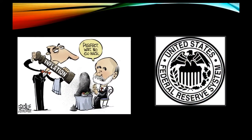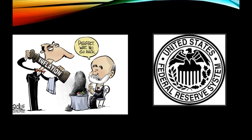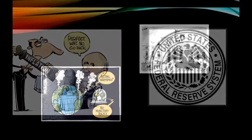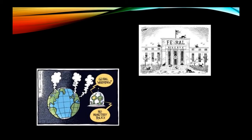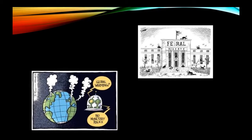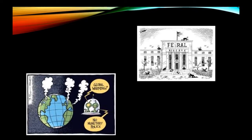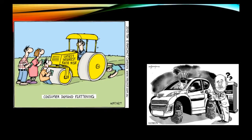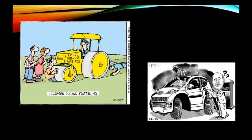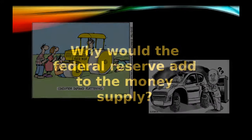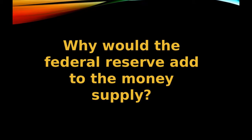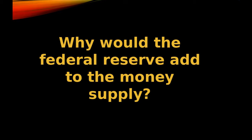Whenever the government does anything to improve inflation, it causes unemployment to get worse, and vice versa. When the government tries to help unemployment, inflation increases. This short-run trade-off is something that the government faces in every policy. The inverse relationship between unemployment and inflation can be seen through a graph known as the Phillips Curve. A controlled and constant increase of the money supply will keep inflation low while expanding economic activity and employment.